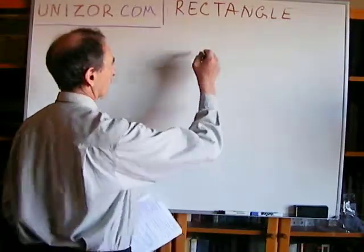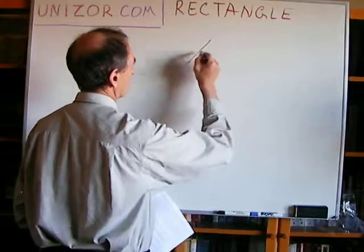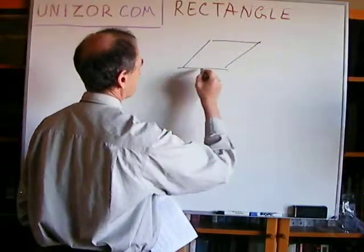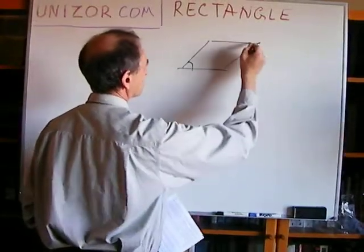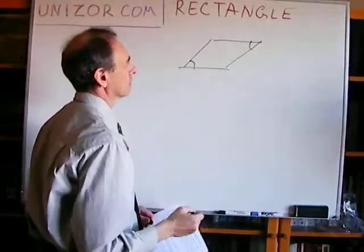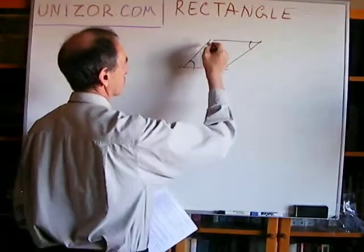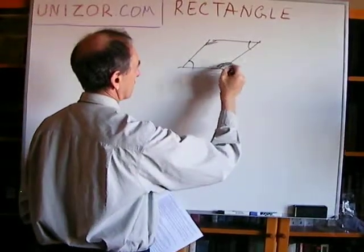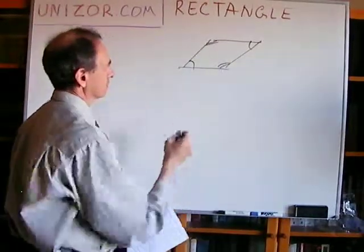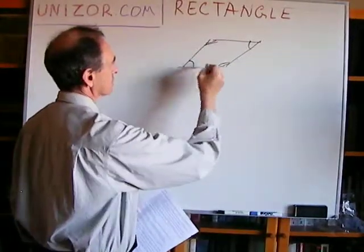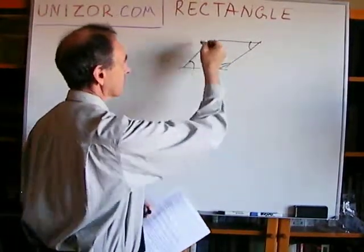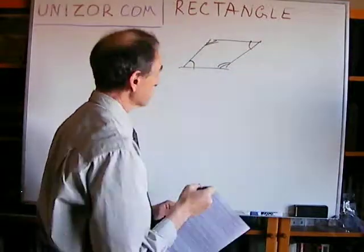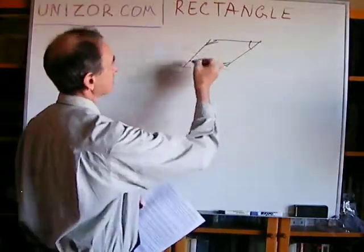In the general parallelogram, we have only opposite angles congruent to each other. These are this to this and this to this, and they're different between themselves — they're actually supplemental.